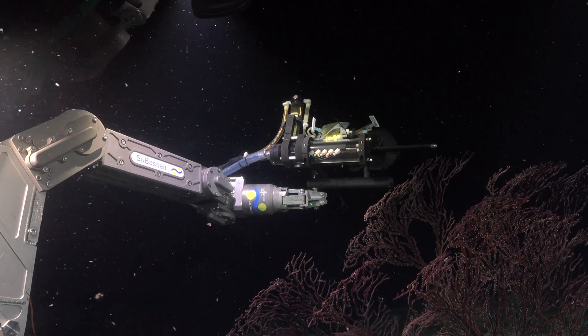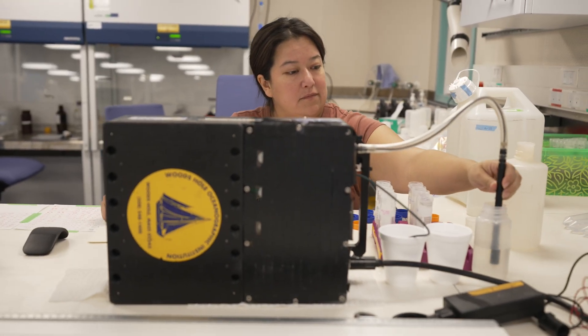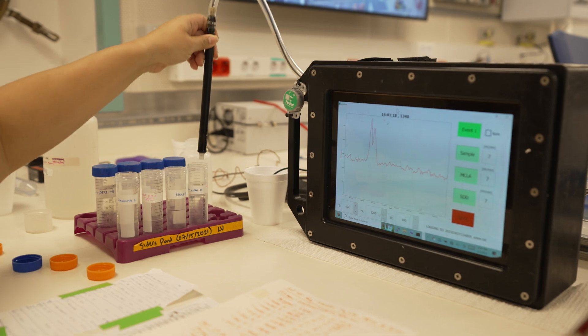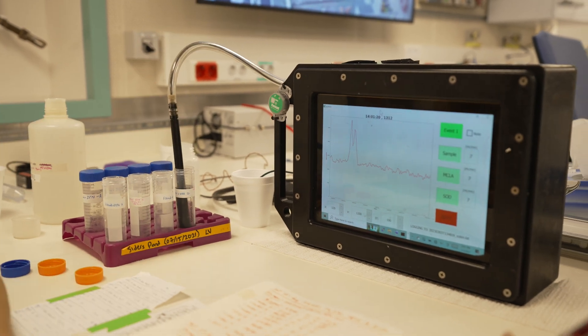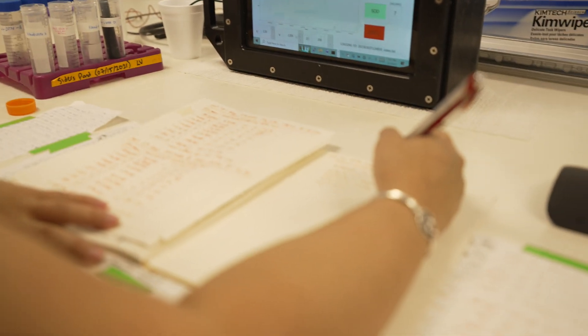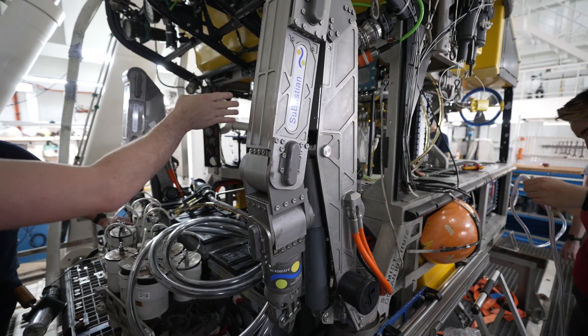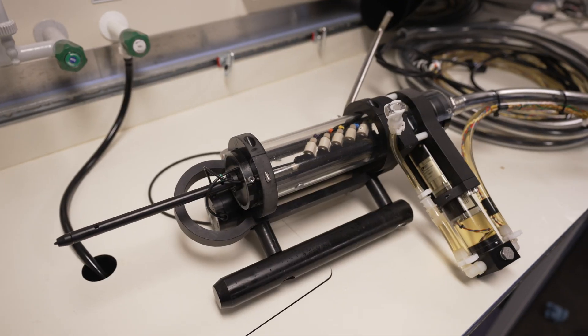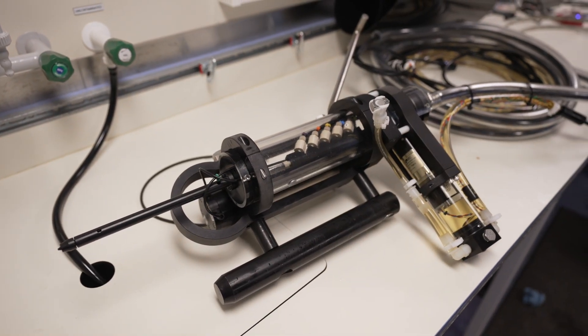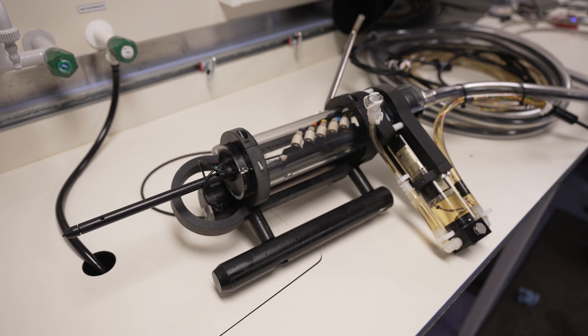DISCO was the first ROS sensor that Colleen Hansel's lab developed, and we used that as the mechanical framework to build Solaris. Solaris essentially has the same internal skeleton, but it has a new body to tolerate these high-pressure environments.